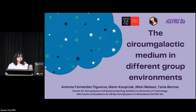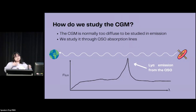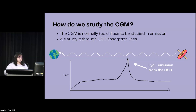We just saw a talk about the circumgalactic medium and how you can study it in emission, but usually the circumgalactic medium is too diffuse to be studied in emission. So how can we study it if it's too diffuse to be studied in emission?